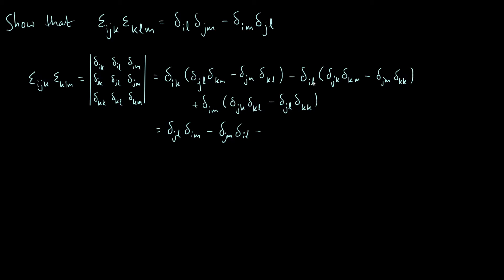And then what's going to happen next? Next term is delta_il, or minus delta_il delta_jk delta_km. We're going to use the same argument. j is k, j has to be equal to k, but k has to be equal to m as well. Therefore, j has to be equal to m. And so we can write that more succinctly as just delta_jm.